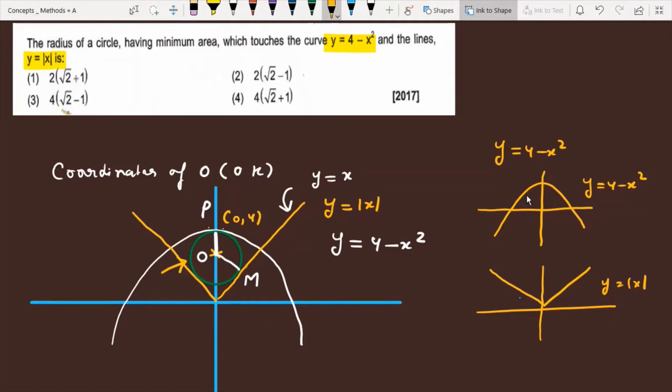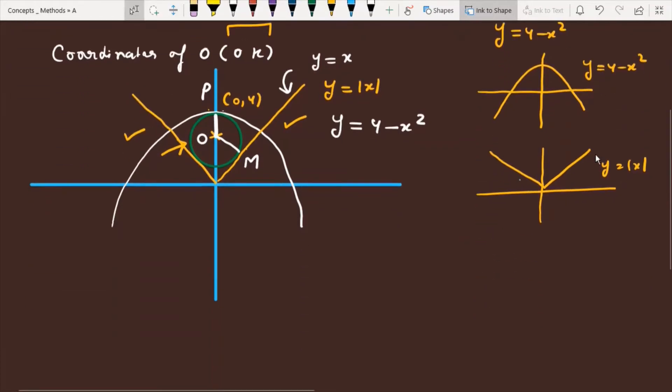So let's start and see. If this circle touches the parabola and y equals mod x, let the center of the given circle be (0, k). Let me assume the coordinates of (0, k).